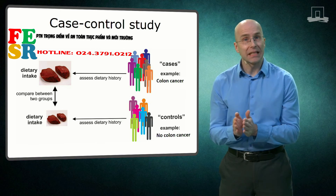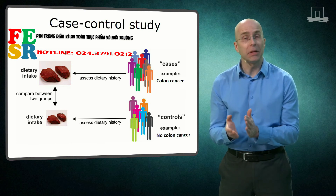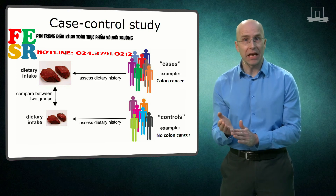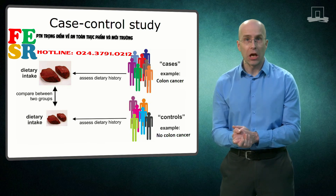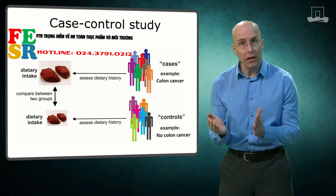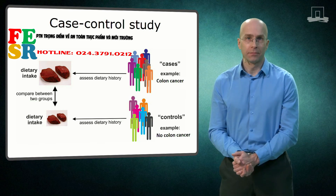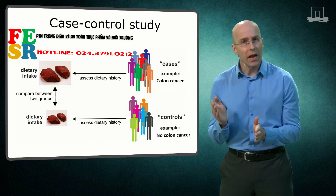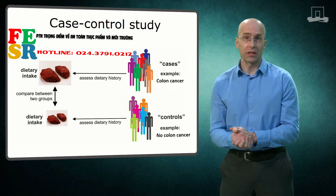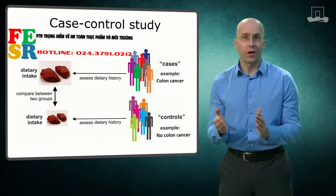For this particular example, it's tempting to conclude that the higher meat intake in colon cancer patients suggests that meat consumption causes colon cancer. However, because of the inherent limitations of observational studies, the only conclusion that can be reached is that a higher meat intake is associated with, or correlated with, a higher risk of colon cancer. Whenever journalists, researchers, or students make any causal inference between diet and disease based on an observational study, they are over-interpreting the data.